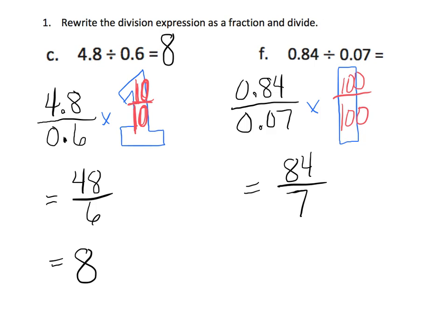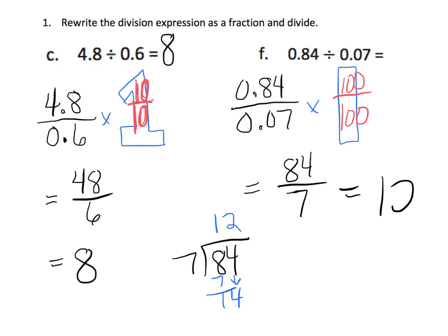Parents, teachers, you may have to pause this video and walk through that step. We don't want it to be just memorized — we really want students to understand how we can move from 0.07 times 100 and get 7. But now that I've got the fraction 84 divided by 7, I can divide. You may need to have your students divide longhand. 7 goes into 8 one time with 1 left over; bring down the 4 and 7 goes into 14 two times. Our answer is 12, so 0.84 divided by 0.07 equals 12.